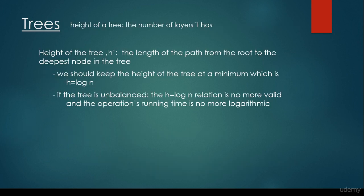So the height of the tree is the number of layers it has. The formal definition is that it is the length of the path from the root to the deepest node in the tree, and we should keep the height of the tree at a minimum, which is approximately h = log n. Because if the tree is unbalanced, then the h = log n relation is no longer valid and the operations' running time is no longer logarithmic — so we can end up with a quite slow algorithm even with binary search trees if the tree becomes unbalanced. For most cases, unfortunately, this is what happens. That's why we are going to consider balanced binary search trees, such as AVL trees and red-black trees.